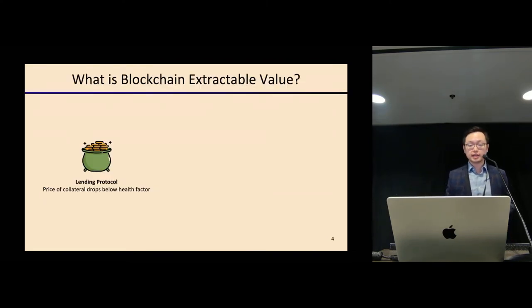So what is blockchain extractable value? We typically observe this common pattern where, starting from blockchain applications, they rely on some events to keep the protocol functioning, and these events can lead to profitable trading opportunities. Taking the lending protocol as an example, the lending protocol typically relies on liquidation. In liquidation, your collateral is sold by some entity to pay your debt.